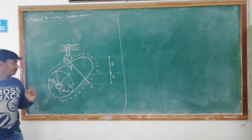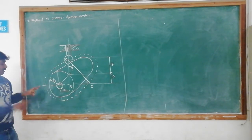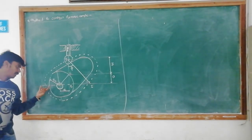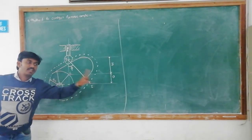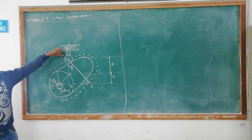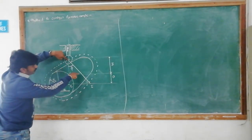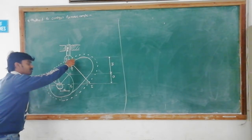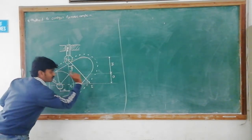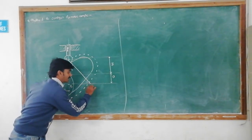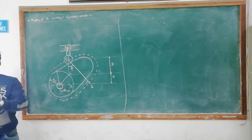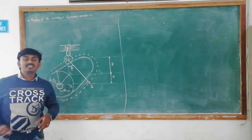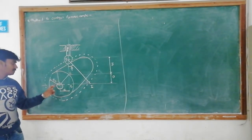If we see in this diagram, this horizontal line is the horizontal axis of the cam. If we extend this normal to the pitch curve, it intersects this horizontal axis of the cam, and this point is called I — the instantaneous velocity center for the cam.